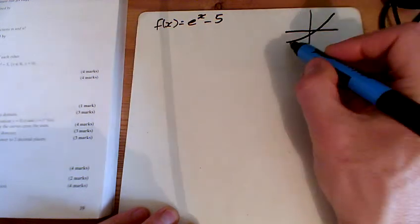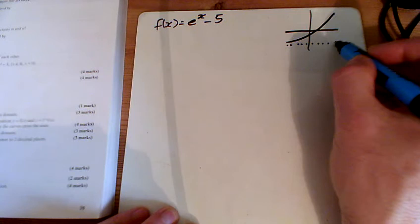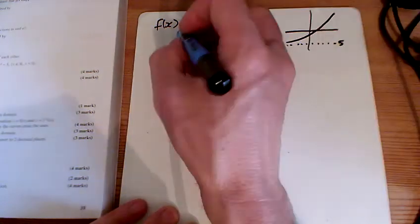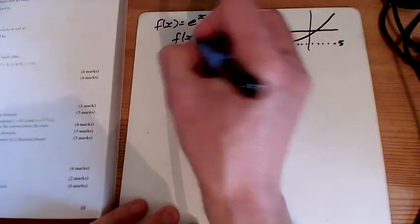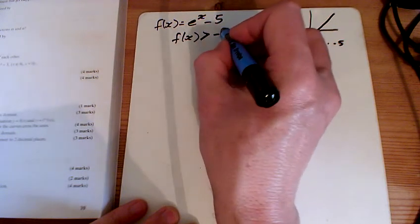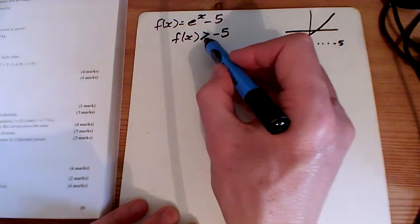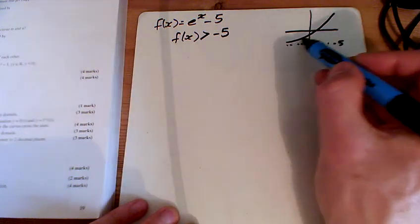It's going to whoosh like this, with an asymptote down here at minus 5. And that tells you what the range is going to be. The range is going to be greater than minus 5. Or equal to? No, it never quite reaches that.